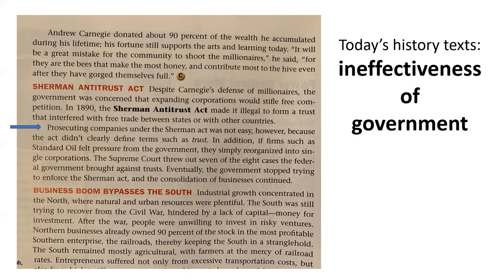Now, in a contemporary history book from the 2000s–2010s, we see the same thing. The third paragraph reads: 'Prosecuting companies under the Sherman Act was not easy, however, because the act didn't clearly define terms such as trust. In addition, if firms such as Standard Oil felt pressure from the government, they simply reorganized into single corporations. The Supreme Court threw out seven of the eight cases the federal government brought against trusts. Eventually, the government stopped trying to enforce the Sherman Act, and the consolidation of business continued.' Even here we see government couldn't draft effective legislation, cases got thrown out, businesses outsmart government, and the paragraph ends with a sense of inevitability — government gives up and business as usual continues.